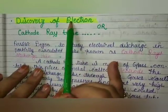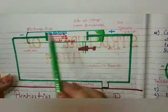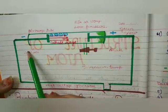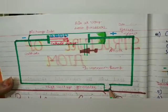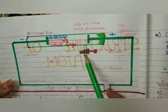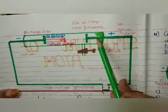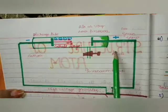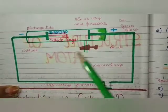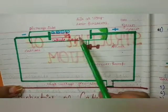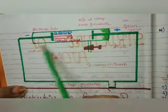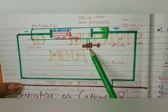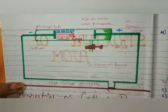I have told you first what the cathode rays are. Here you can see the diagram — this is a discharge tube experiment. This discharge tube has two electrodes connected, one side cathode and the other side anode, connected with a battery. There is a vacuum pump that helps maintain the pressure. The pressure is low and voltage is high. This is the discovery of electrons.